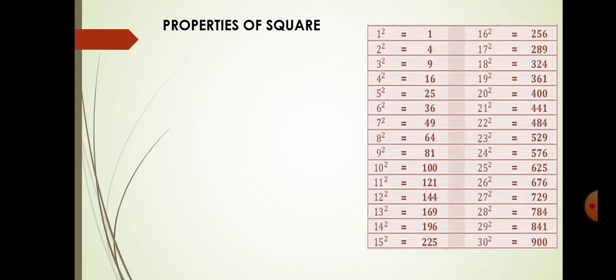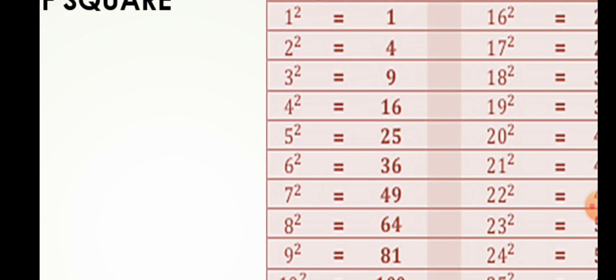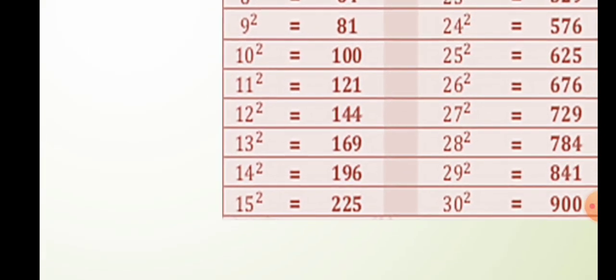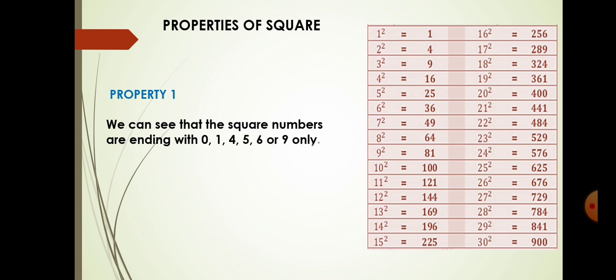Now, properties of squares. For the first property, please look at the digit at the ones place. You will see that the digit at the ones place is 1, 4, 9, 6, 5, and including 0 — that is: 0, 1, 4, 5, 6, 9. These are the digits that will always come at the ones place. Square numbers end with 0, 1, 4, 5, 6, or 9 only. The digits 2, 3, 7, or 8 will never appear at the ones place of a perfect square.